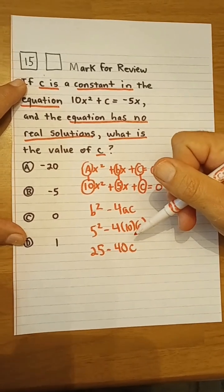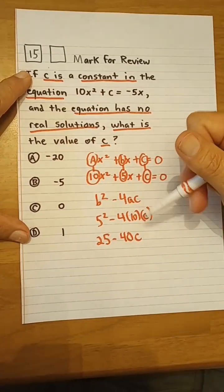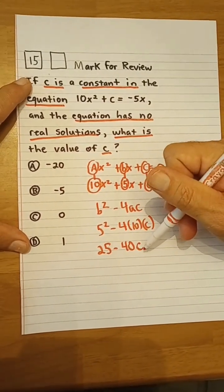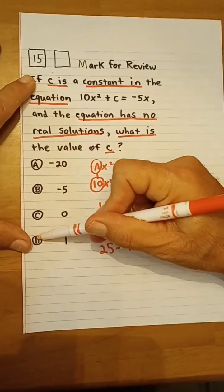So the only value here that could make this a negative result would be d as in dog 1, 25 minus 40 is negative 15. So our answer is d.